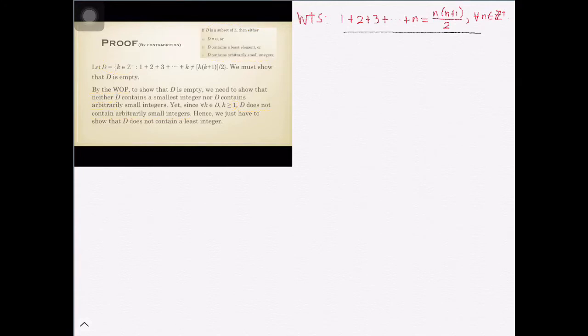We are done showing that D does not contain arbitrarily small integers. So for us to show that D is empty, we have one more item left — that is to show that D does not contain a least element. To show that, let's use proof by contradiction.